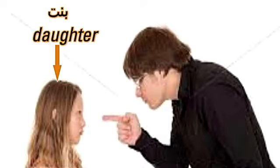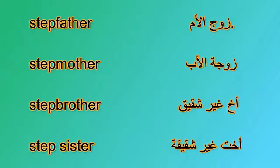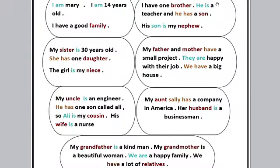Wife, daughter, son. Step father اللي هو زوج الأم. زوج الأم. انما زوجة الأب. الأخ غير الشقيق. والأخت غير الشقيقة. ومعنى أقارب اللي هي معناها. هنقرأ مجموعات الجمل دي مع بعض.